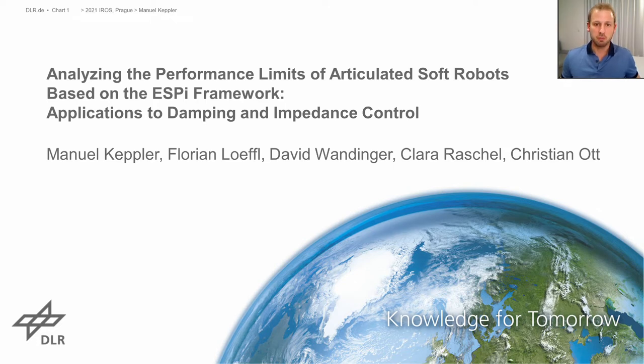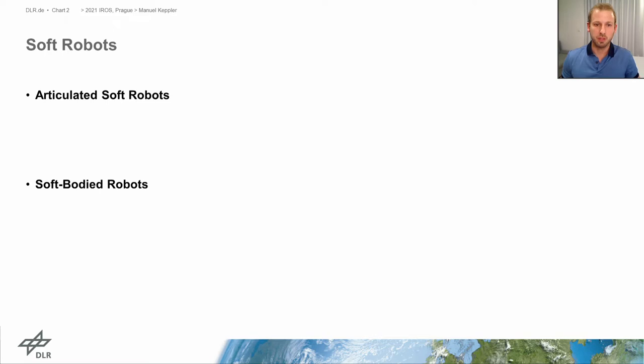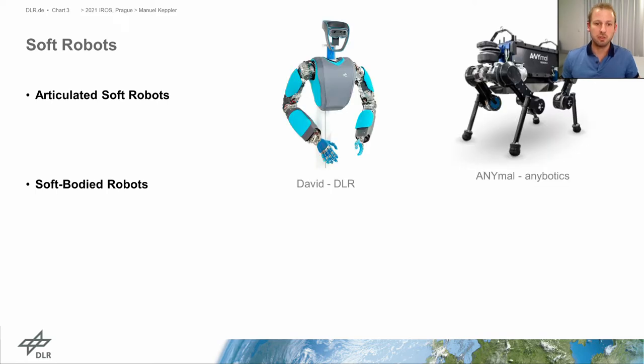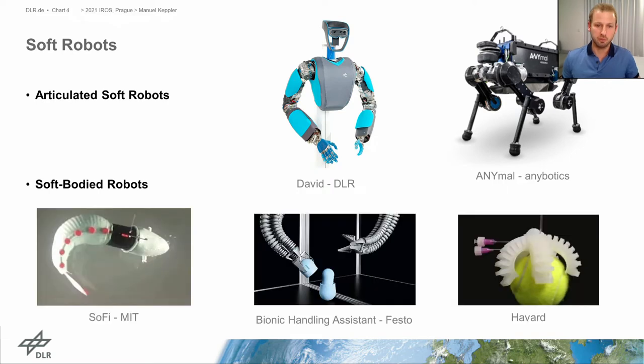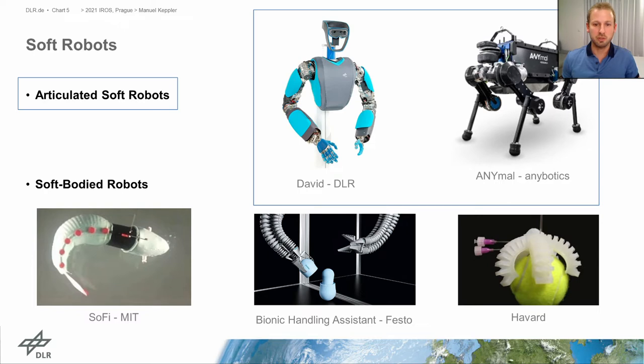Let me start with the motivation behind this work. Soft robots come in many shapes and can be broadly classified into two categories: articulated soft robots and soft-bodied robots. This work is concerned with articulated soft robots that have rigid bodies and elastic joints with either constant or variable stiffness.